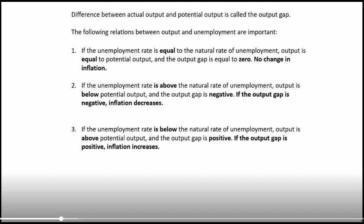If the unemployment rate equals the natural rate of unemployment, output equals potential output — that's your natural rate of output — the output gap equals zero, and there's no change in inflation. Inflation remains constant.